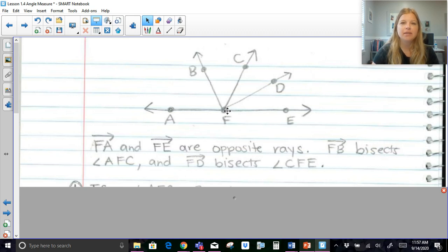Because opposite is going to mean that they're going exactly in opposite directions. Where if one's going east and one's going west, then it's going to be a perfect straight line. If I had opposite rays and they were north and south, then that's also going to be a perfect straight line.